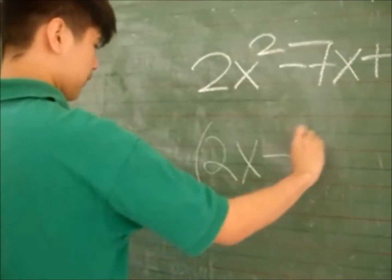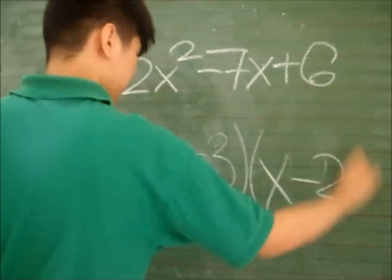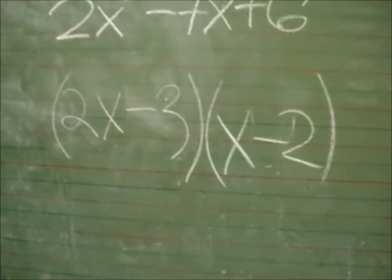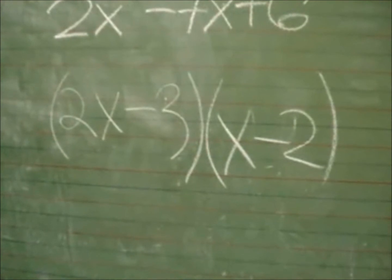Writing the answer like a boss. The quantity of 2X minus 3 multiplied to the quantity of X minus 2.